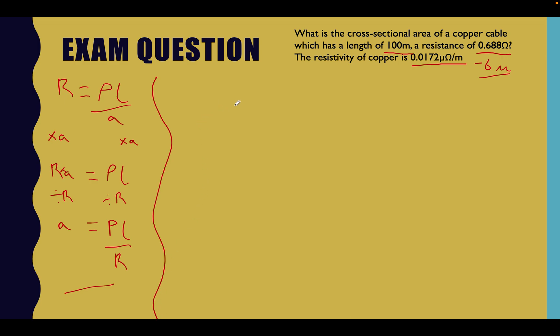Move on to the next bit. Right, now we've got to deal with this number here, haven't we? 0.0172 micro-ohms per meter. Sound. So let's write this out first. 0.0172 micro-ohms per meter. Fine. So we know that number there is, in standard form, is going to be 0.0172 times 10 to the minus 6.